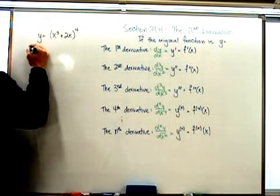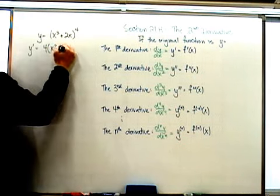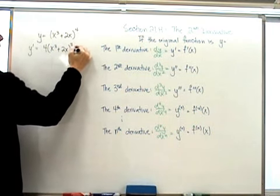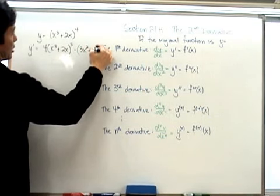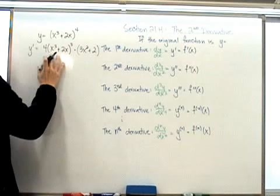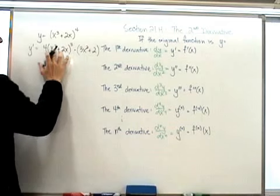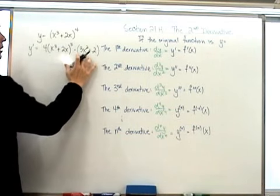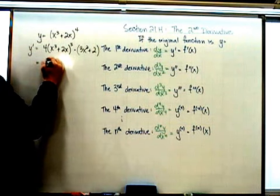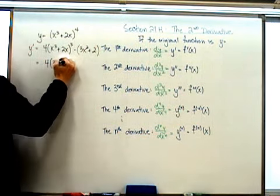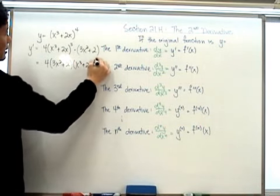So the first derivative y' would be 4 times x to the 3rd plus 2x raised to the 3rd power, times 3x squared plus 2. Because we have to use the chain rule, the derivative of x to the 3rd plus 2x is 3x squared plus 2. Simplified, this becomes 4 times 3x squared plus 2 times x to the 3rd plus 2x raised to the 3rd power.